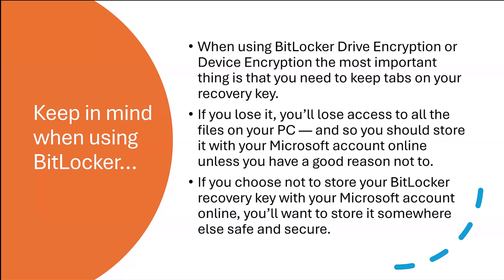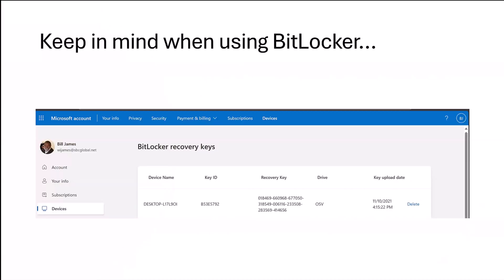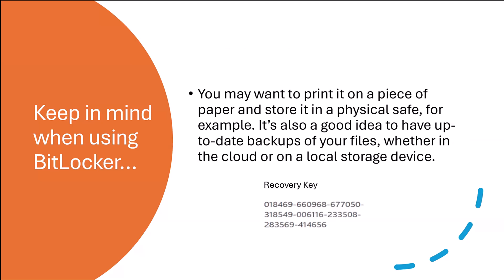When using BitLocker encryption or device encryption, the most important thing is to keep tabs on your recovery key. If you lose it, you'll lose access to all the files on your PC. You should store it with your Microsoft account online unless you have a good reason not to. If you choose not to store the recovery key online, store it somewhere else safe and secure — for example, print it on paper and store it in a physical safe. It's also a good idea to have up-to-date backups of your files, whether in the cloud or on a local storage device.